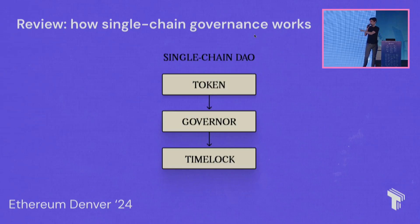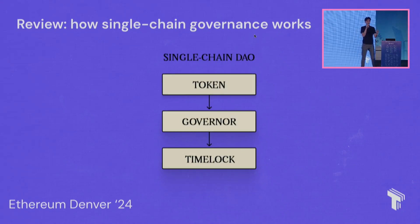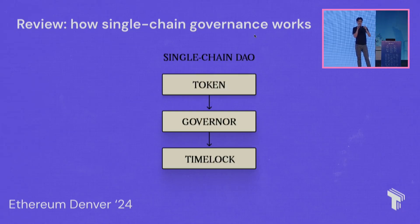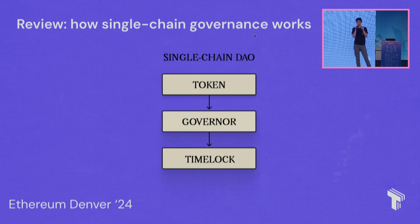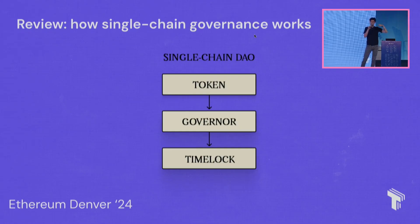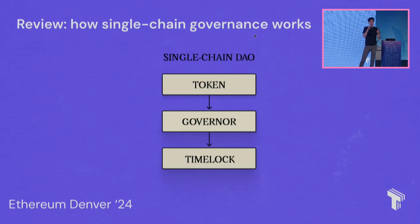The second contract is the governor contract, which is most responsible for DAO operations. It has rules for what constitutes a valid DAO proposal, manages the lifecycle of proposals — when they go up for a vote and when voting happens — counts the votes, determines if a vote passed or failed, and keeps track of the executable call data a proposal will execute if it passes. A proposal has two parts: a human-readable description logged on-chain, and a machine-readable executable part.